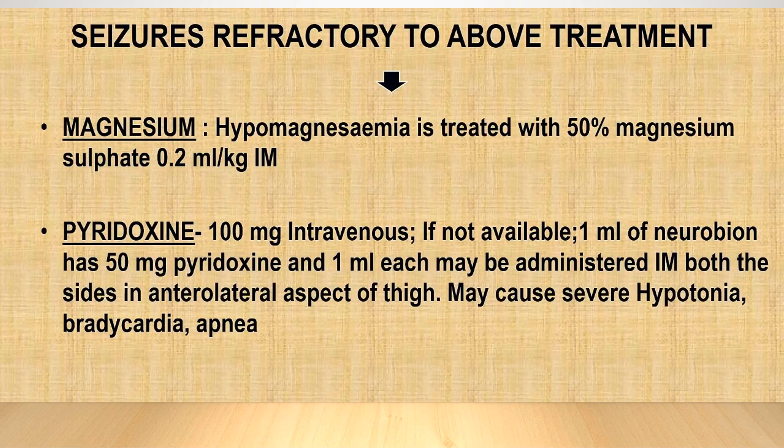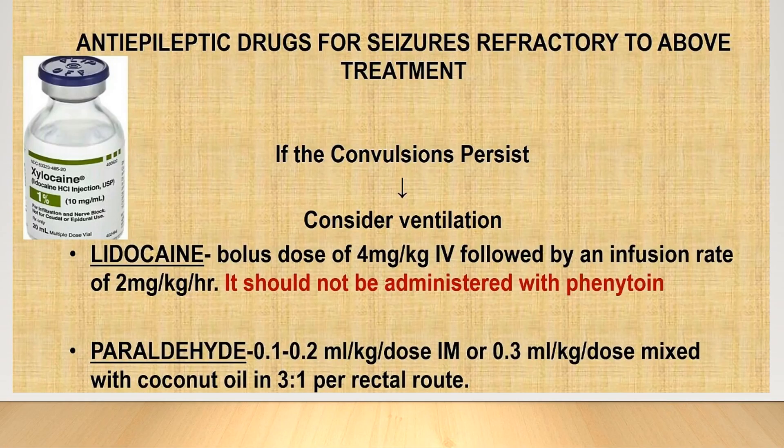Pyridoxine should also be given. If not available, 1 ml of neurobion, which contains 15 mg of pyridoxine per ml, can be used as an alternative. We should treat and investigate case by case. If seizures still persist after phenobarbitone and the above measures, we can go for lidocaine or paraldehyde.